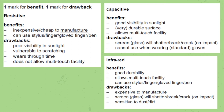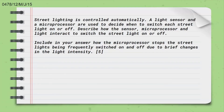Let's move on to the next question. If you haven't watched the chapter explanation video for Chapter 5, check the description to watch it — there are two parts, so don't forget to watch the second part. The next question is: street lighting is controlled automatically. A light sensor and a microprocessor are used to decide when to switch each street light on or off. Describe how the sensor, microprocessor, and light interact to switch the street light on or off, including how the microprocessor stops the lights being frequently switched on and off due to brief changes in light intensity. This is a 5-mark question.